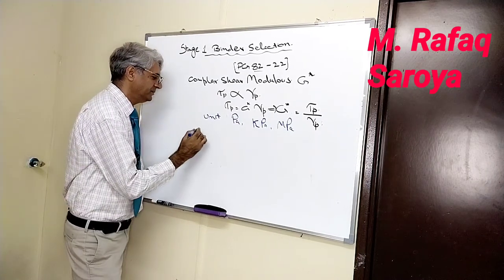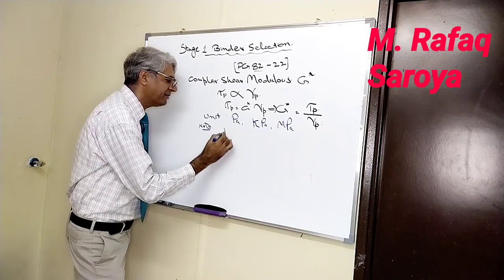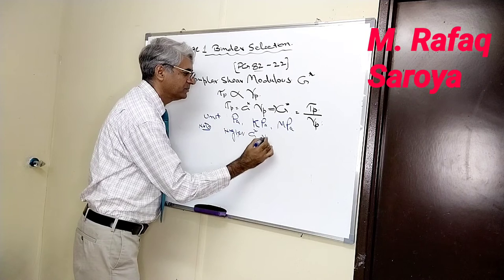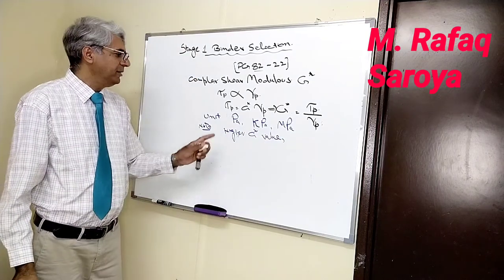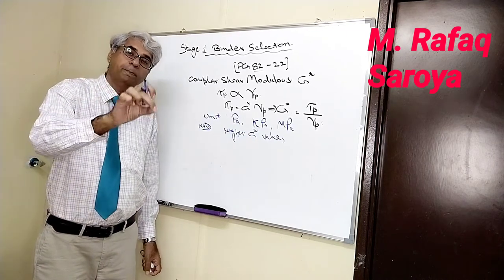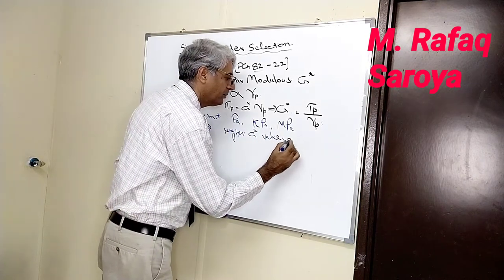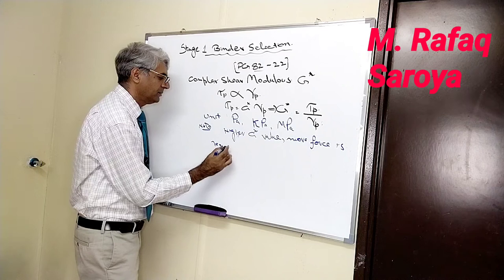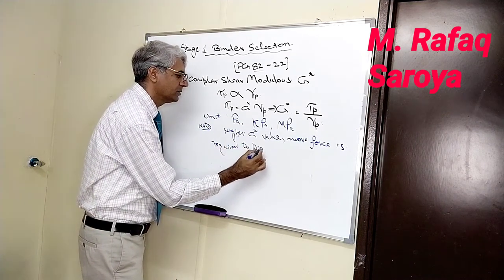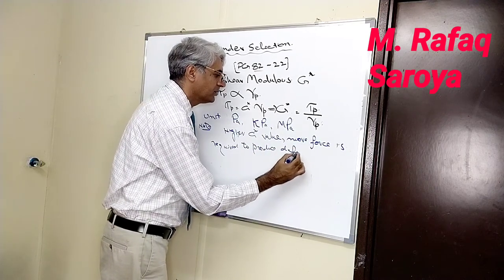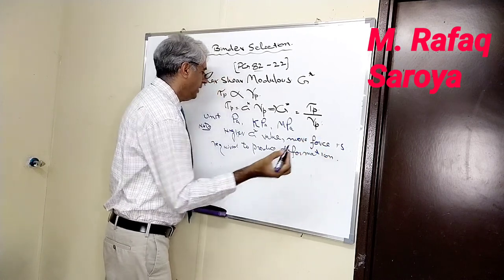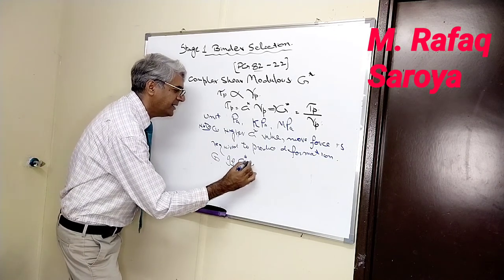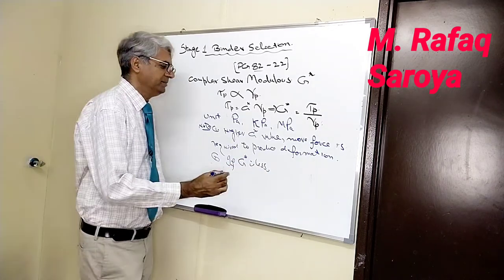When any material has higher G star value, when any material has higher G star value, means more force is required to produce deformation. More force is required to produce deformation.